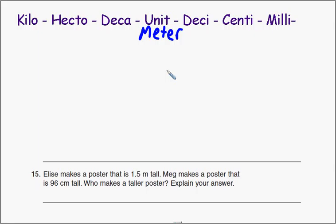Number 15 on our practice sheets reads the following: Elise makes a poster that's 1.5 meters tall. Megan makes a poster that is 96 centimeters tall. Who makes a taller poster? Explain your answer.